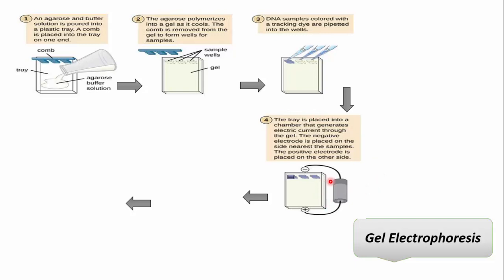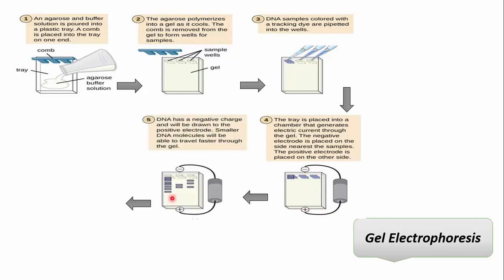We apply electric current. The negative electrode is always placed near the side of the samples, and the positive electrode is placed on the other side. DNA has a negative charge and moves from the negative electrode to the positive electrode. Smaller DNA molecules move faster compared to larger fragments.